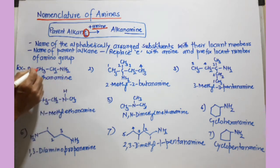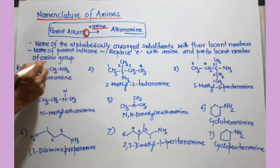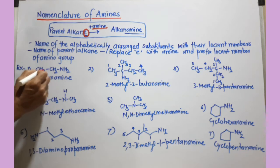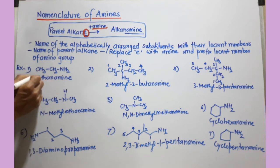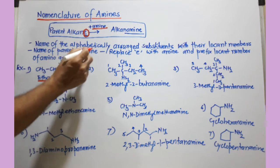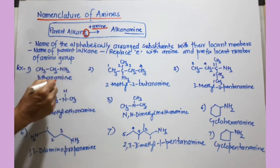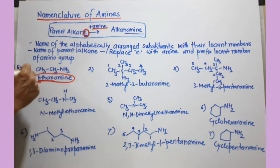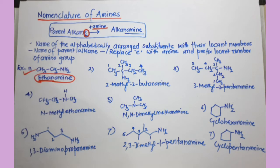Since the selected chain has two carbons and no other substituent, we need not provide any number. Two carbons means ethane, so I write ethane, replace the 'e', and add the word 'amine' — so it becomes ethanamine.